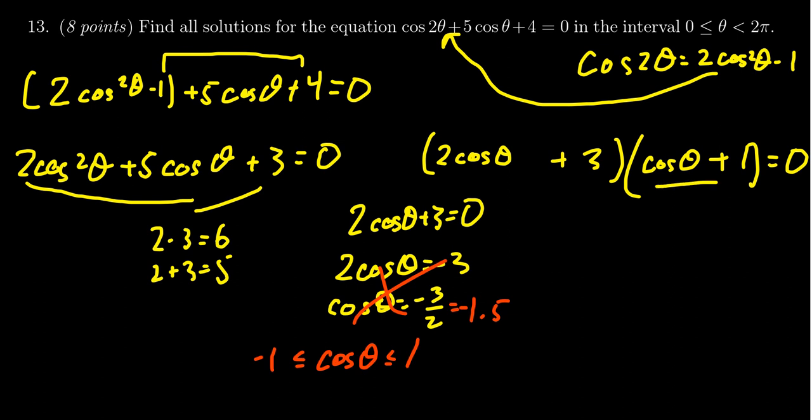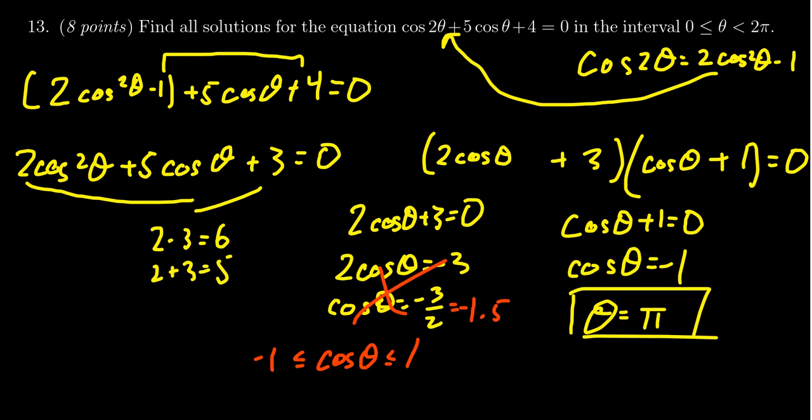So looking at the second factor here, there's a possibility there. Cosine theta plus 1 equals 0. That would suggest that cosine theta equals negative 1. And when does cosine equal negative 1? That happens on the very left of the unit circle. That happens at theta equals pi. And we only need answers between 0 and 2 pi. And so that turns out to be the only solution to this quadratic equation. The answer is going to be theta equals pi.